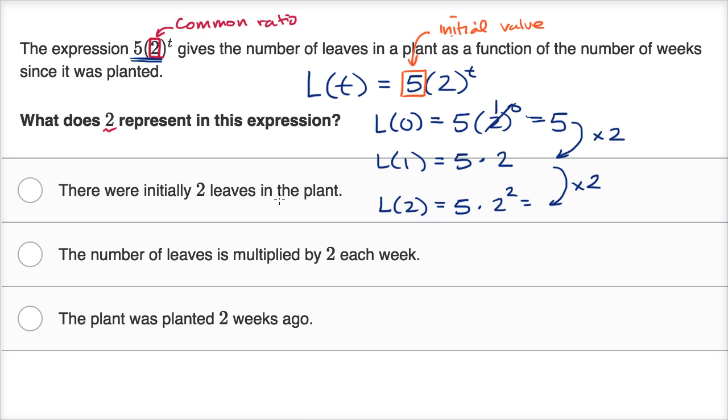So let's see which of these choices actually match up to that. There were initially two leaves in the plant. Well, we know that there weren't two leaves in the plant. Our initial value was five. So let me cross that one out. The number of leaves is multiplied by two each week. Well, that's exactly what we just described. So I like that choice.